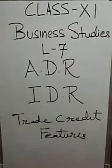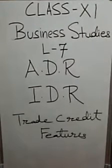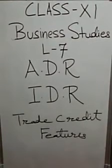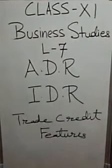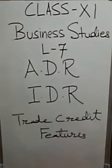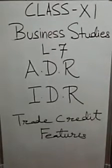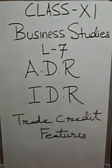Trade credit can be easily available without having any flotation cost, meaning you are not required to spend surplus money for arranging the loan from other institutions. Fourth, increase in price — sometimes the supplier may increase the price of the commodity or raw material supplied if he is selling goods on credit. Fifth, legal action — in trade credit, the buyer generally issues a promissory note, and in case he fails to meet his commitment, the supplier can take legal action against him.